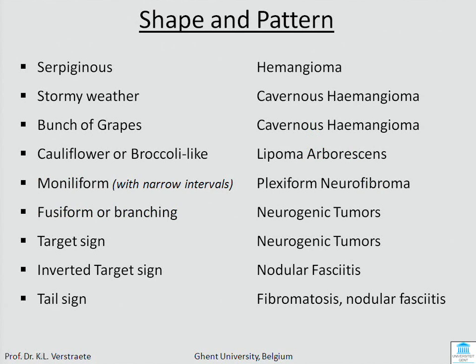You can also use the shape and pattern of a lesion to suggest a name. A serpiginous pattern — like a serpent — is seen in hemangioma. A broccoli-like shape suggests lipoma arborescens, a fatty tumor in a joint. A target sign is sometimes seen in neurogenic tumors. There are many signs which can help you.